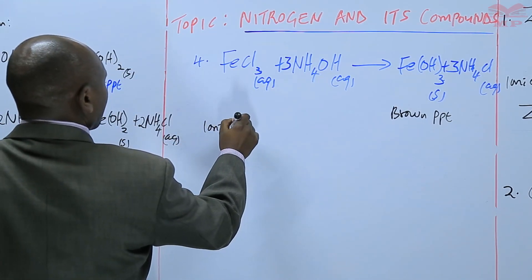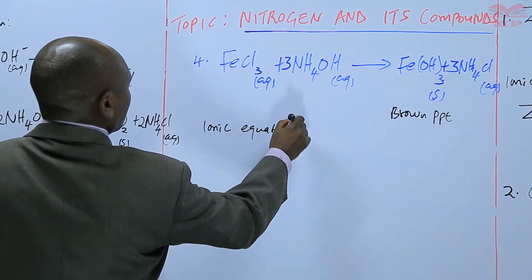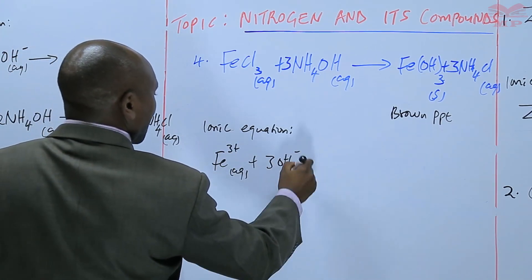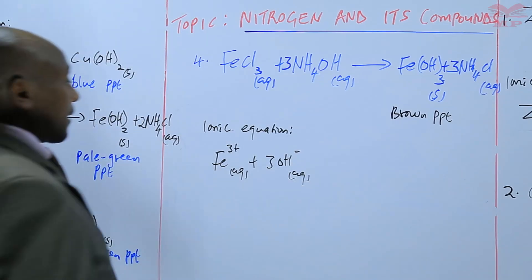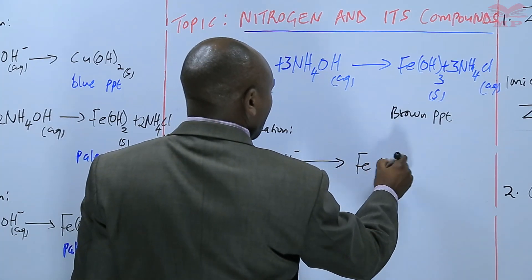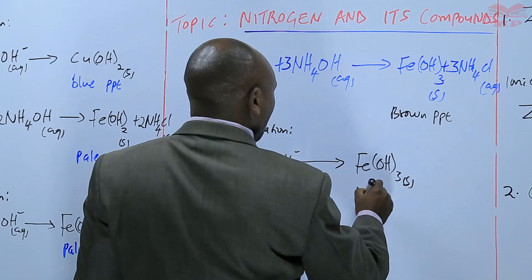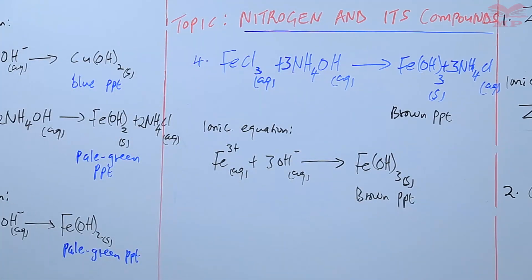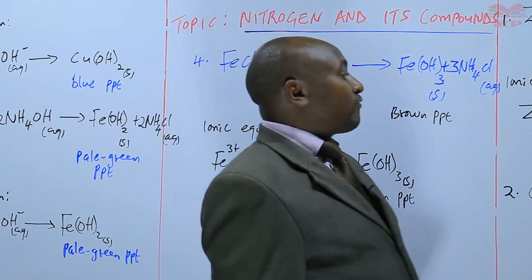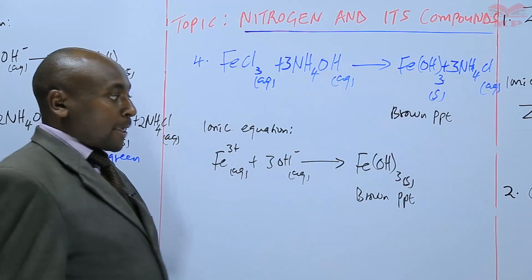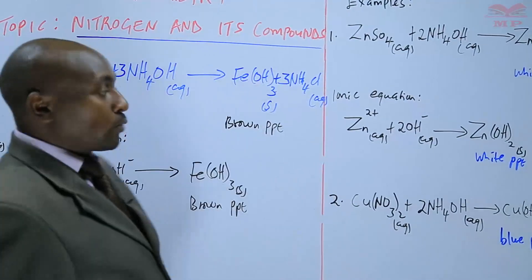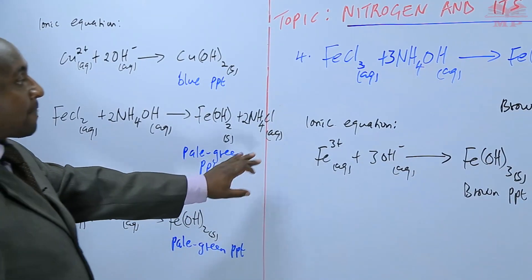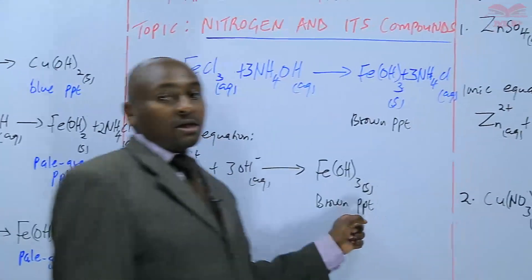The ionic equation shows that iron(III) ions plus hydroxide ions — coming from aqueous ammonia — give us iron(III) hydroxide, which is a brown precipitate. In summary: zinc ions form a white precipitate with aqueous ammonia; copper(II) ions form a blue precipitate; iron(II) ions form a pale green precipitate; and iron(III) ions form a brown precipitate with aqueous ammonia, as explained by the equations we have.